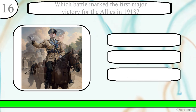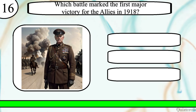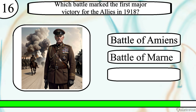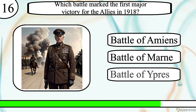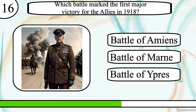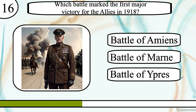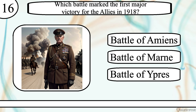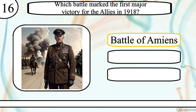Question 16. Which battle marked the first major victory for the Allied offensive in 1918? Battle of Amiens, Battle of Marne or Battle of Ypres? The correct answer is Battle of Amiens.